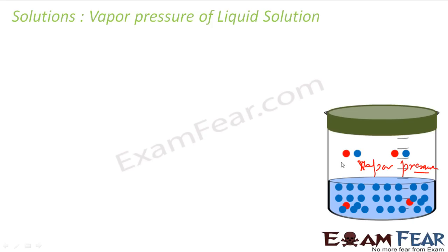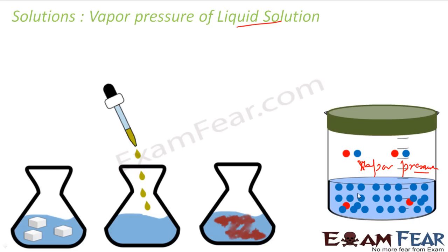In vapor pressure, we'll talk about the liquid solution where my solvent is liquid and my solute can be liquid, gas, or solid. But in this chapter, we will focus on two scenarios of the liquid solution where my solute is solid or solute is liquid.